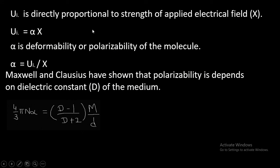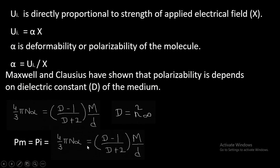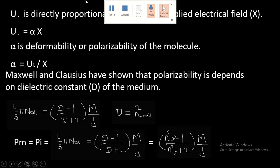It was also concluded that the dielectric constant equals the square of the refractive index at infinite wavelength (where refractive index no longer changes), denoted η_∞. Therefore D = η²_∞, and the equation for molar induced polarization becomes: (4/3)πNα = (D − 1)/(D + 2) × M/d = (η²_∞ − 1)/(η²_∞ + 2) × M/d. In the next video, the focus will be on what happens when a polar molecule is placed into an electrical field.